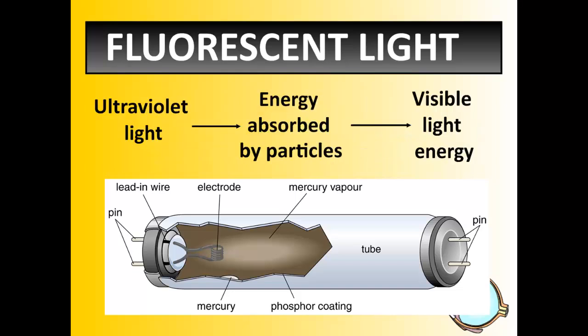So what we have in a fluorescent light is ultraviolet light — energy absorbed by particles — which then makes visible light energy. You have these three steps in a fluorescent light bulb that generate light.